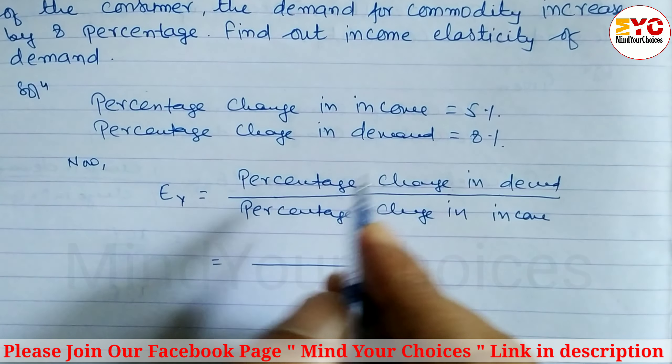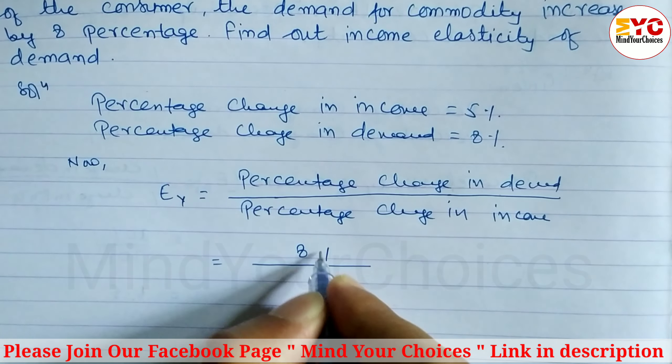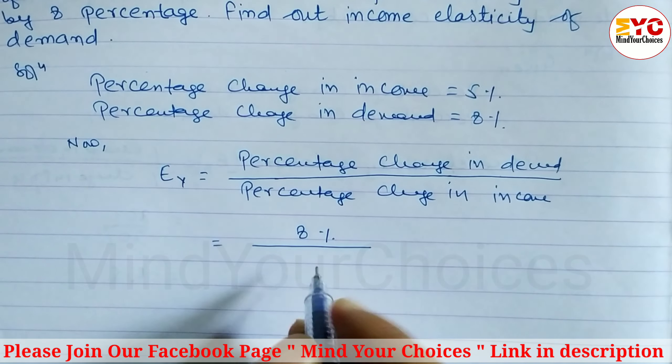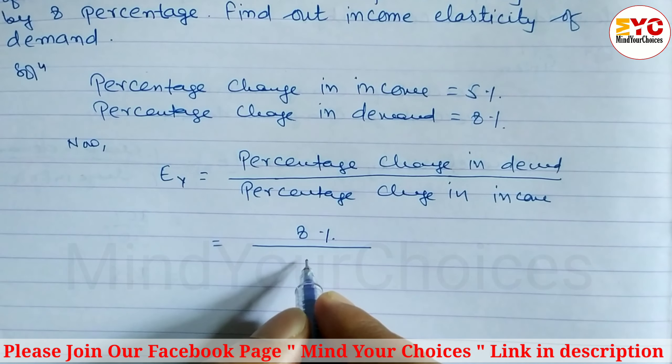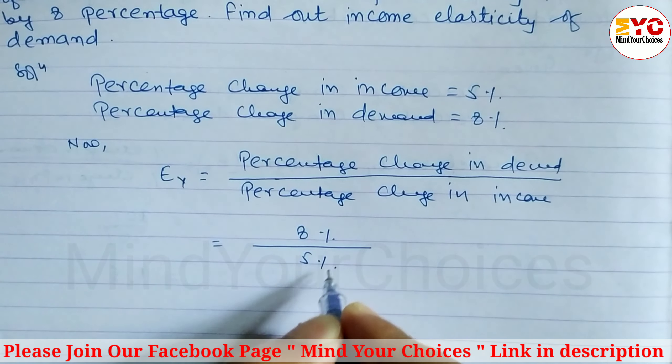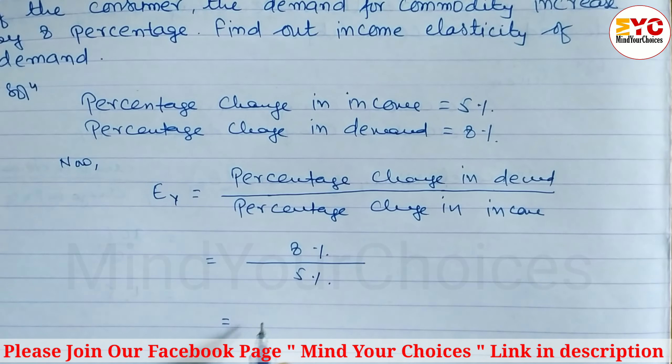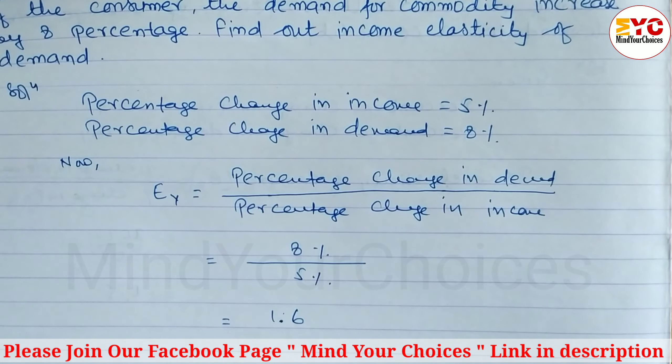You can see the percentage change in demand is equal to eight percent, so we write eight percent divided by percentage change in income, which is five percent. When you divide eight by five, we get 1.6. So income elasticity of demand is equal to 1.6. Hope you understand this question taken from elasticity of demand and supply.